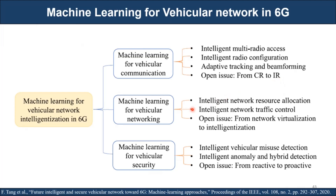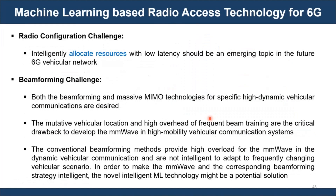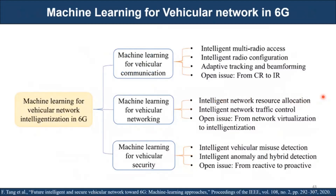Another key application of machine learning for vehicular networks is resource allocation. Vehicles are moving, so if you look at the resource graph with power domain and frequency domain, different vehicles — vehicle one, two, three, and four — are assigned to different sub-carriers and are continuously moving at high speed. Using machine learning, this resource allocation should predict the situation and continuously provide the best quality of experience and services. People are now talking about a new term called QoES — Quality of Experience and Services — which has to be very high for sixth generation.